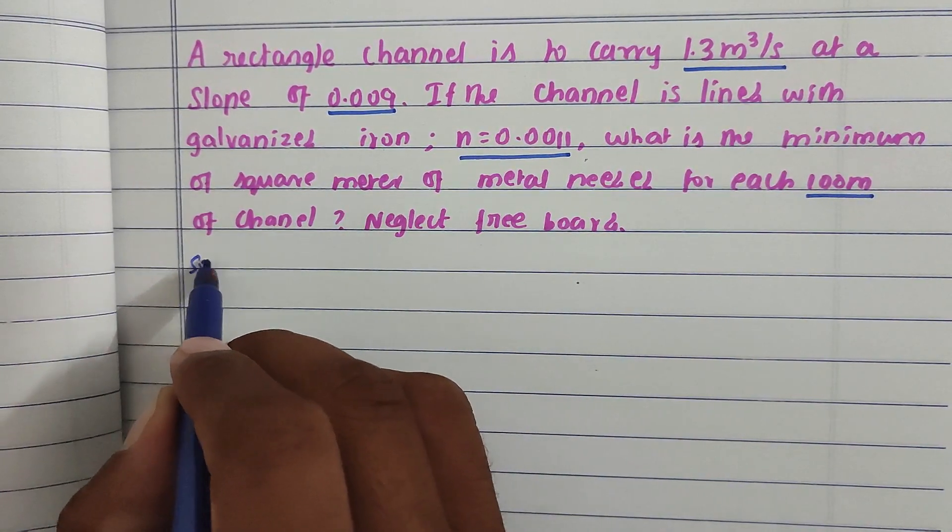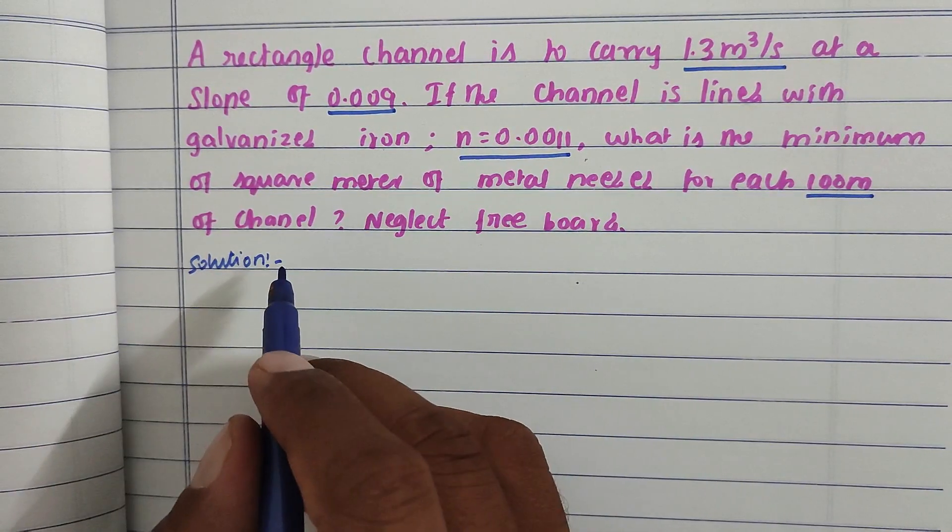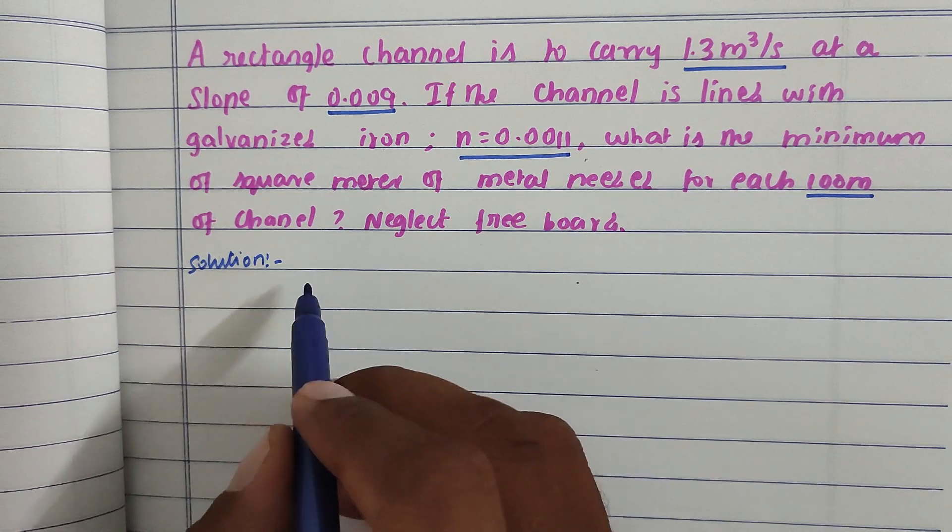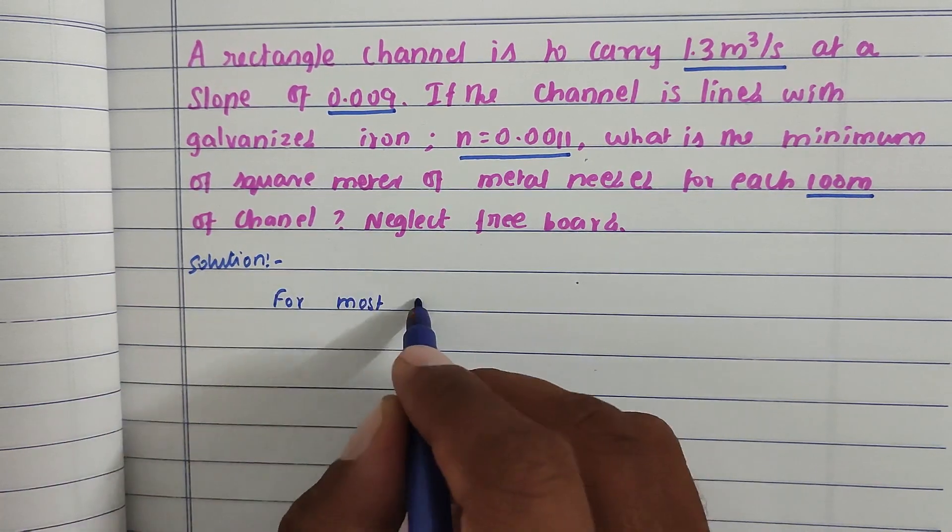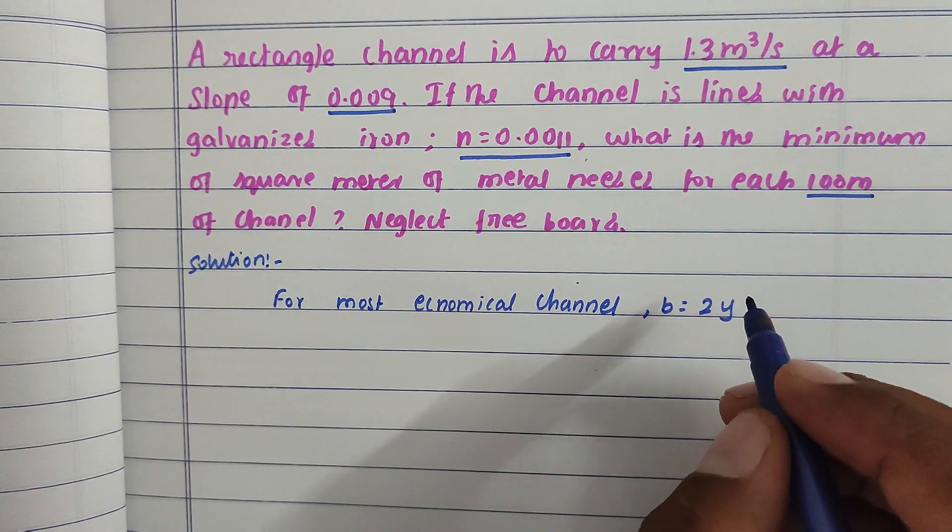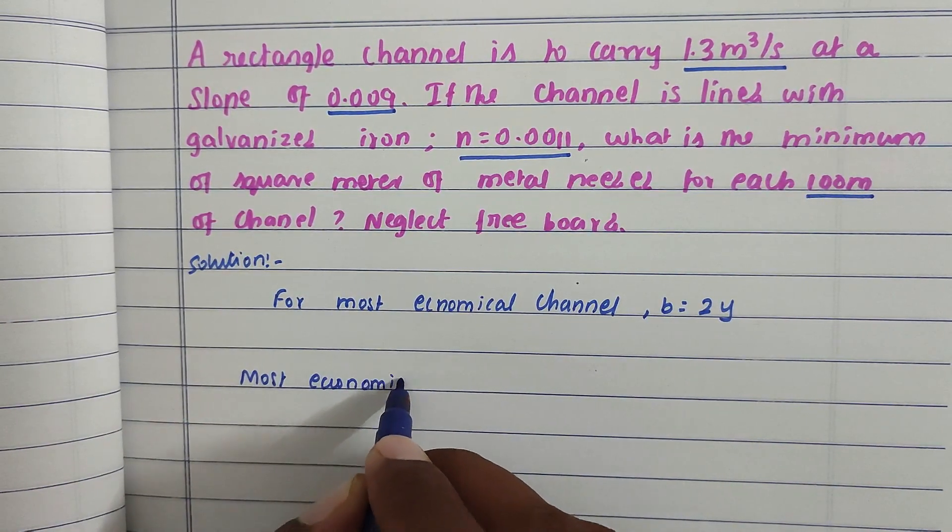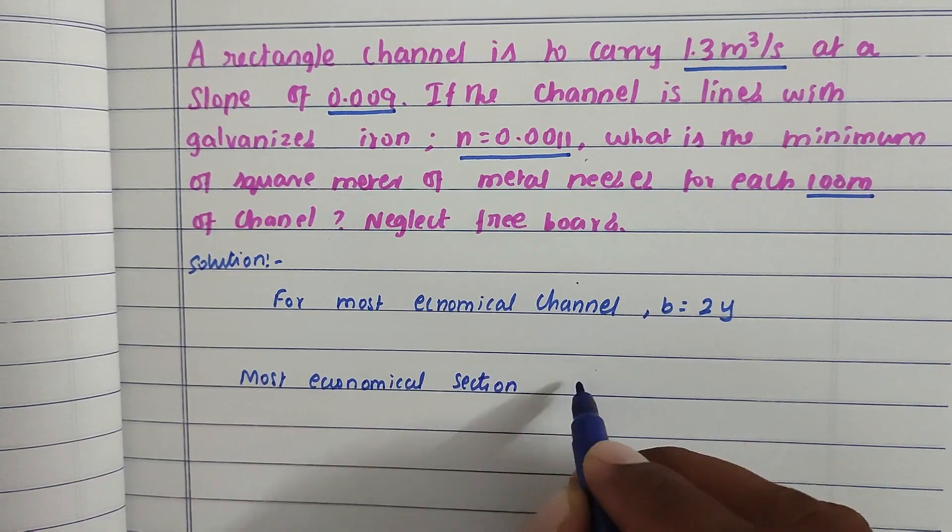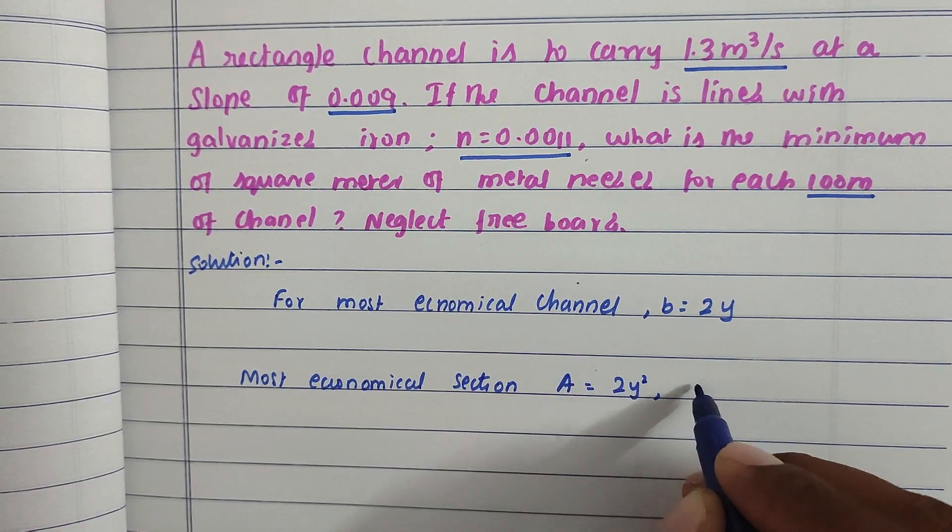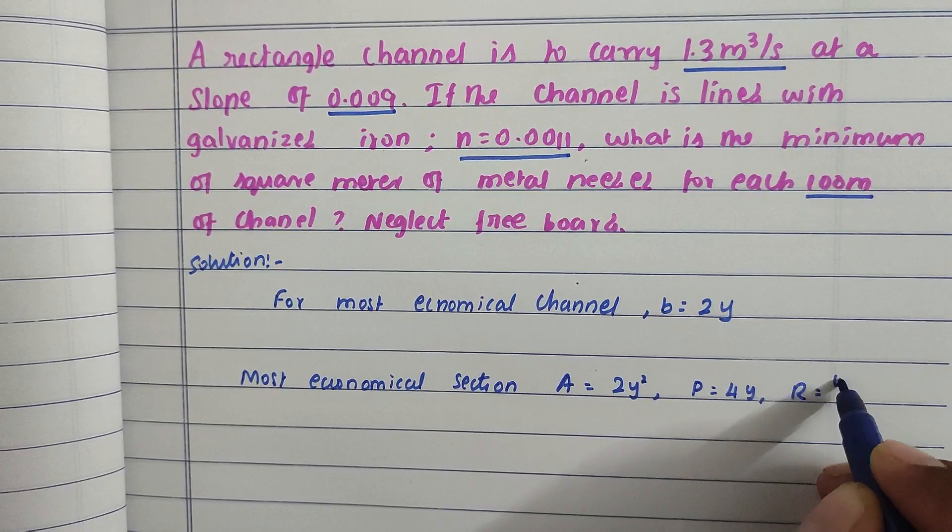Now the solution. For the most economical section, rectangular channel B equals 2y. The most economical channel area: A equals 2y squared, P equals 4y, R equals y by 2.